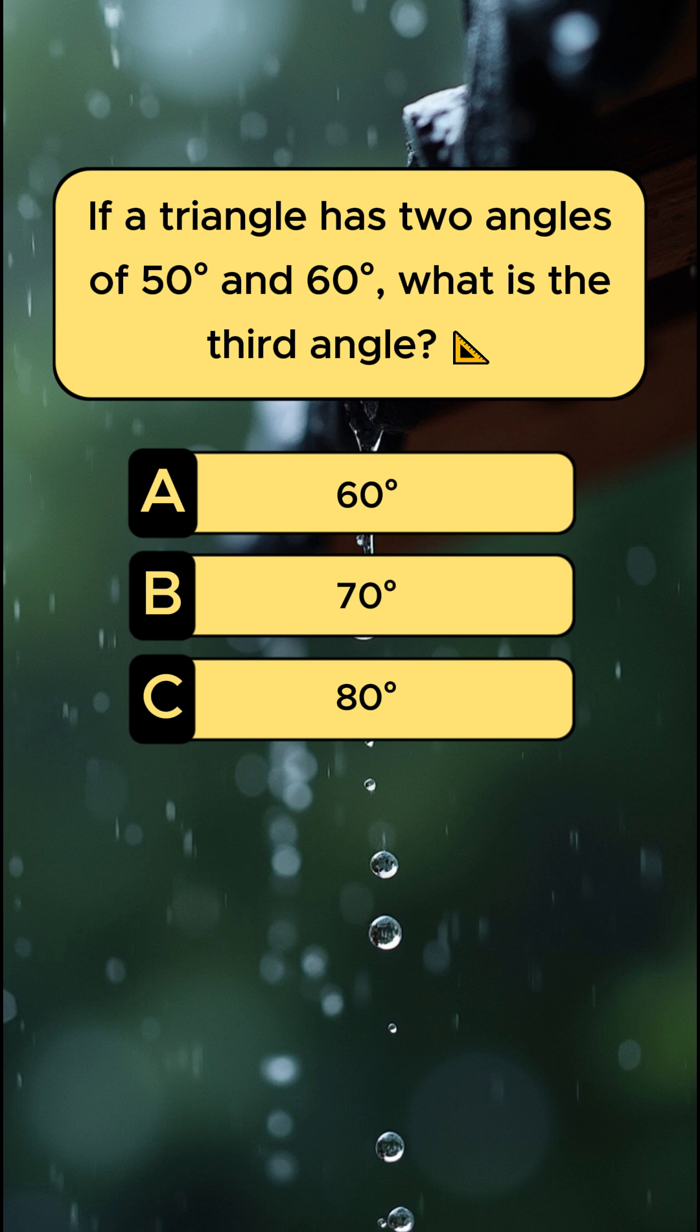If a triangle has two angles of 50 degrees and 60 degrees, what is the third angle? The answer is 70.